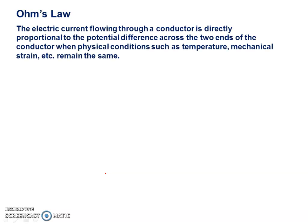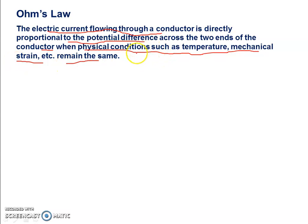First of all, what is Ohm's Law? There was a scientist George Simon Ohm who performed so many experiments, and after those experiments he reached the conclusion that electric current flowing through a conductor is directly proportional to the potential difference across the two ends of the conductor, only when the physical conditions such as temperature, mechanical strain etc. remain the same. It means if all physical conditions are constant, the current is directly proportional to potential difference.